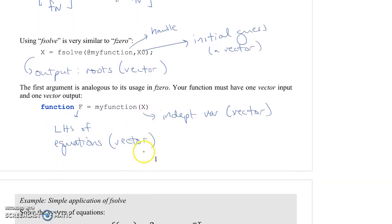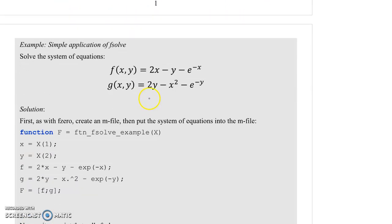So, to make things easier, let's take a look at a simple example of fsolve. Consider this two-by-two system of equations. We have F(x,y) and G(x,y). And you want to find the values of x and y that make these both equal to zero. So, to do this, we're going to write an M file, which is your function. And into that function, we're going to put the following commands. Let's go ahead and go over to MATLAB.